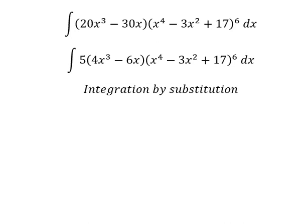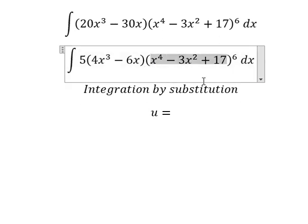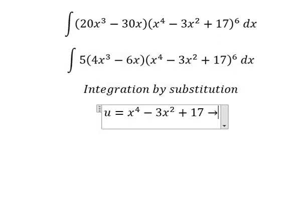I'll set u equal to x^4 - 3x^2 + 17. Then we need to find the derivative of both sides.